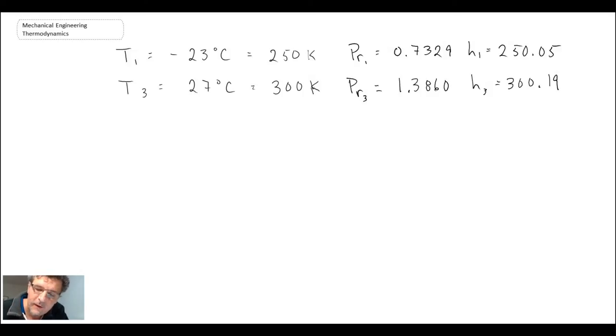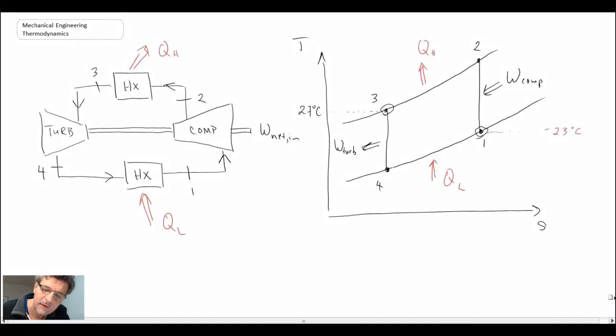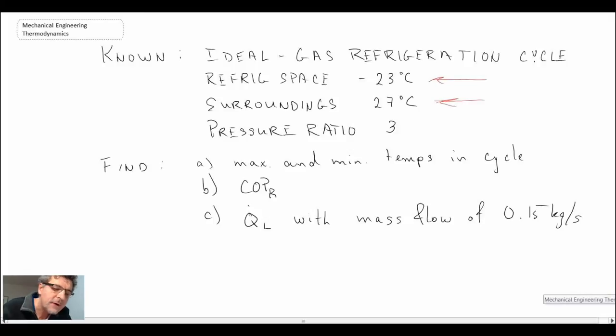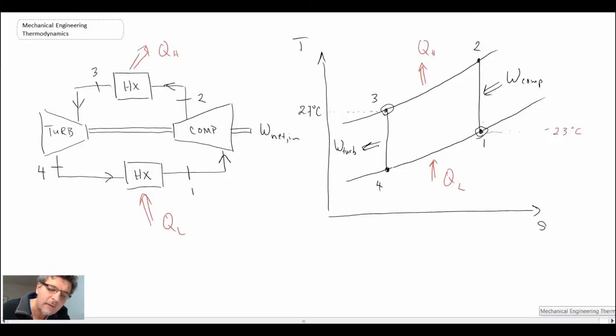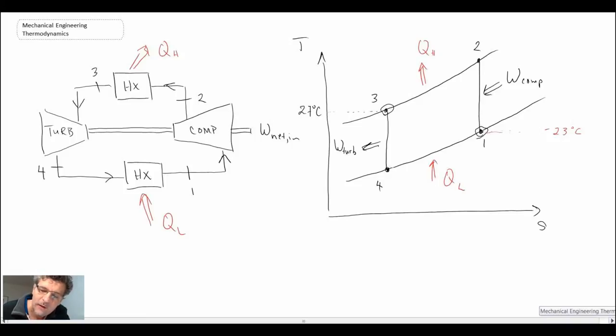With the relative pressure, the other thing we know from the problem statement is the pressure ratio. Looking at our T-S diagram, the pressure ratio is between 1 and 2, as well as 3 and 4, and that pressure ratio is 3. We can use that in our relative pressures to get the missing state information.